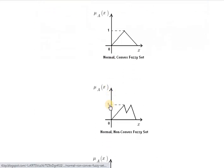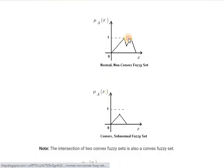Let's see the fourth type of set. Non-convex fuzzy set. A non-convex fuzzy set is described by a membership function whose values are strictly monotonically increasing then strictly monotonically decreasing with increase in the values of the elements of that particular fuzzy set. This is the fourth type of non-convex fuzzy set.